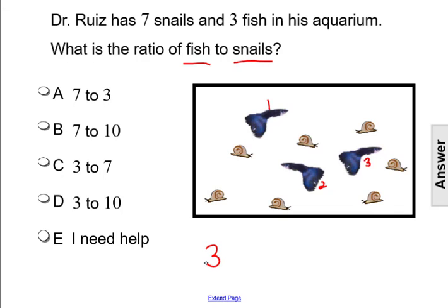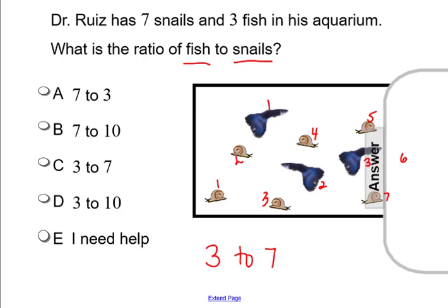That's three fish. Now counting the snails: one, two, three... oops, four, five, six, seven snails. So the ratio would be three to seven. This part-to-part ratio is answer choice C.